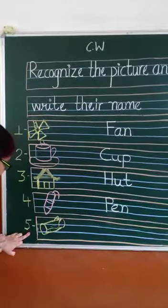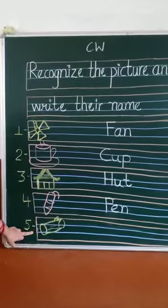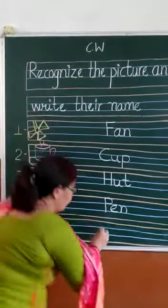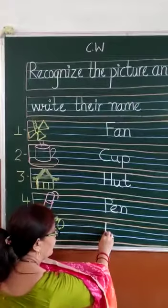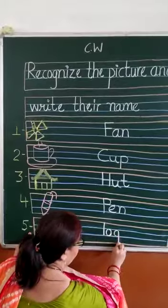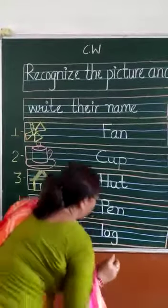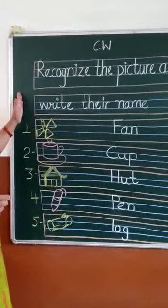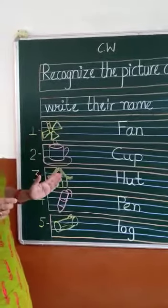Now, number five, which picture? Log. This is a log. L, O, G, log. You understand? Picture ko recognize karo aur name likho. Okay? Thank you.